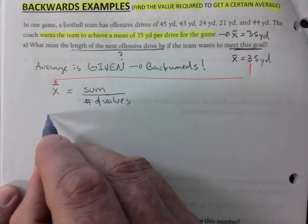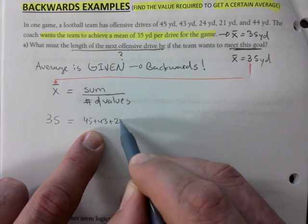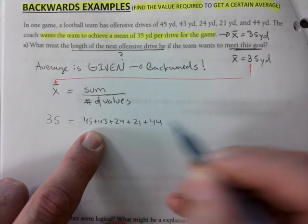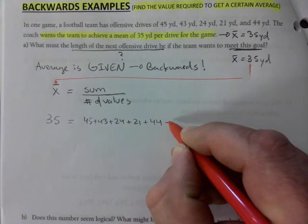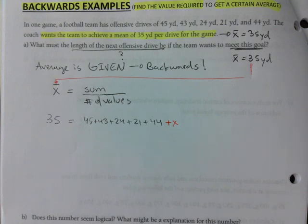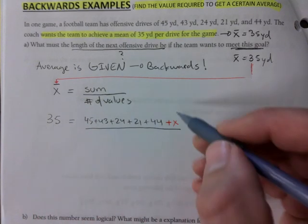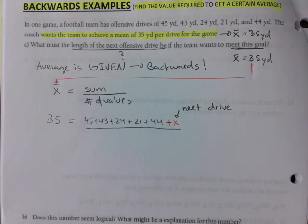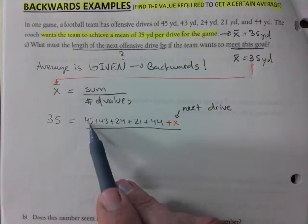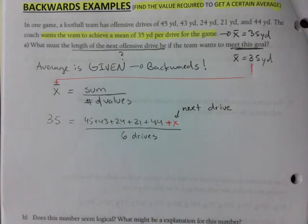So it's 35 is equal to - let's do the sum here - 45, 43, 24, 21, and 44. But here's the kicker: we want to know what would that other value have to be, right? We're going to call that x, like the next drive, in order to get the 35 that we're after. This is the next drive. That is the equivalent of the next drive, the next paycheck, the next thing you need to achieve your goal. So how many values are we adding? 1, 2, 3, 4, 5, 6, right? This is a placeholder, so 6 drives we're going to consider, 6 values that we're adding.